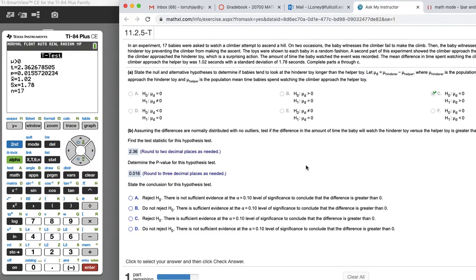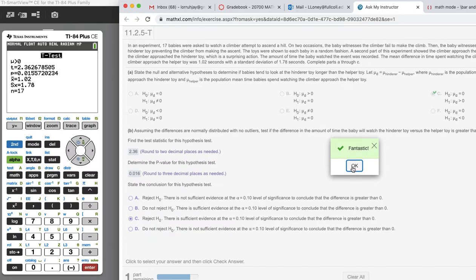So what's the conclusion? If the level of significance is 0.1, this is less than that. So we reject H0. So it's going to be either A or C. Reject H0, there is not sufficient evidence. That doesn't make sense. So we'll go to C. Reject H0, there is sufficient evidence to conclude the difference is greater than 0. So we'll go with part C. And looks like that is the answer.